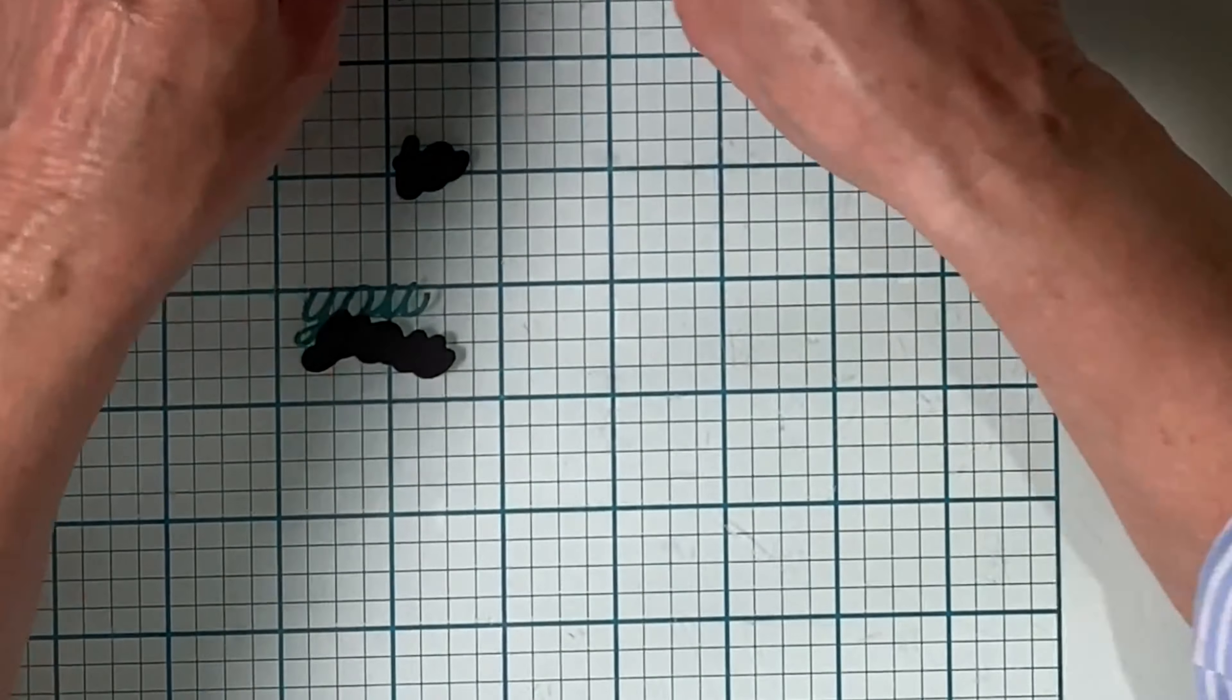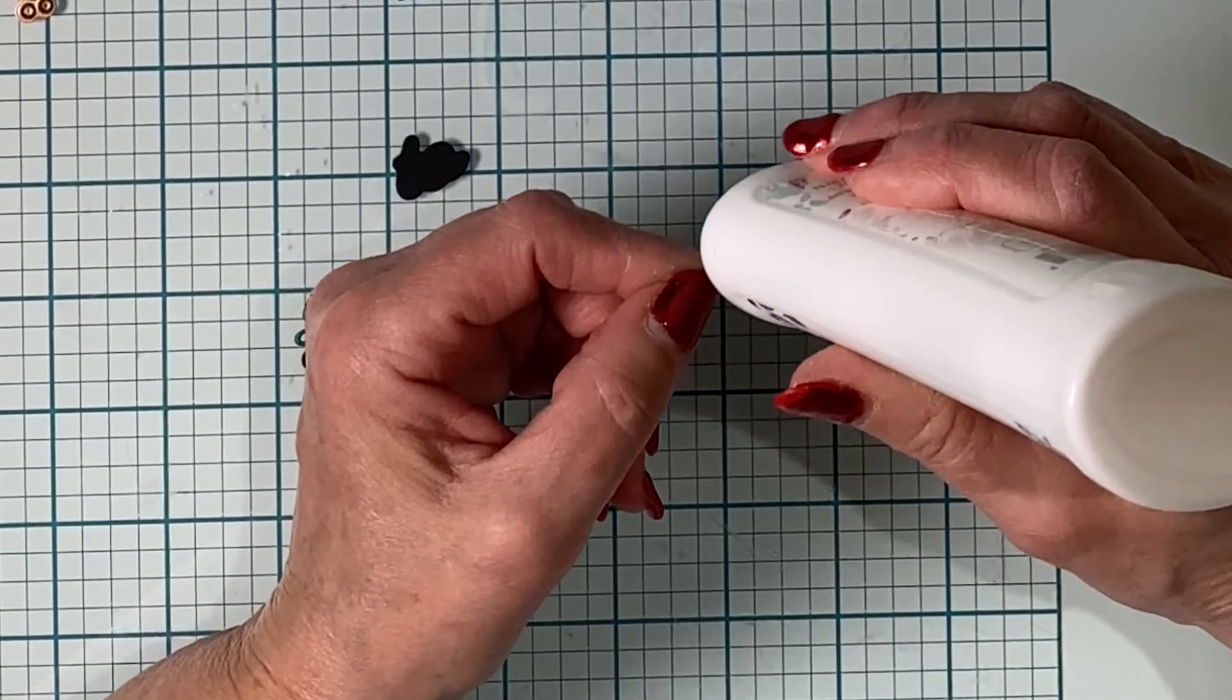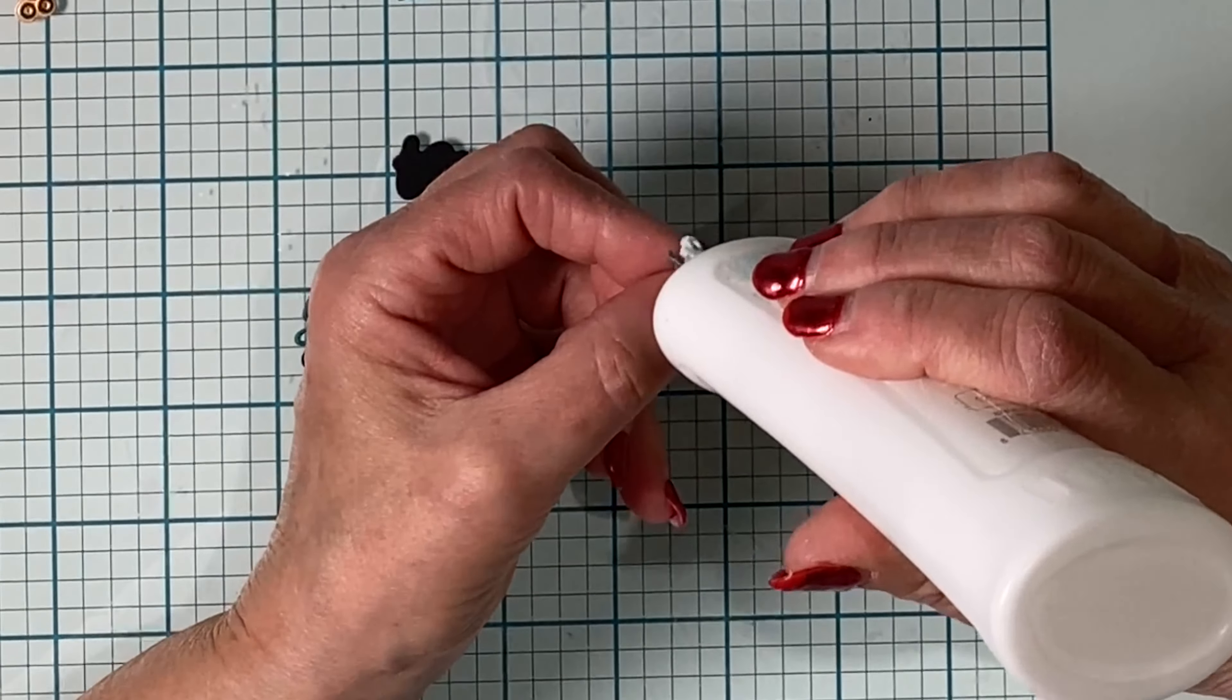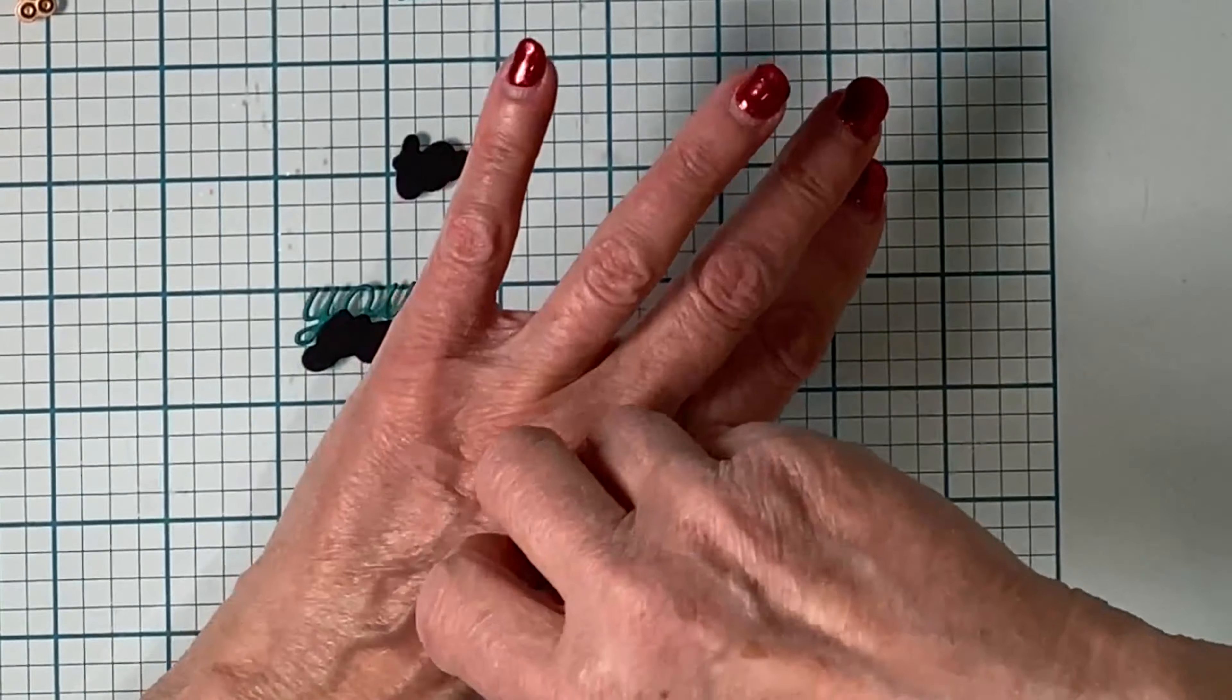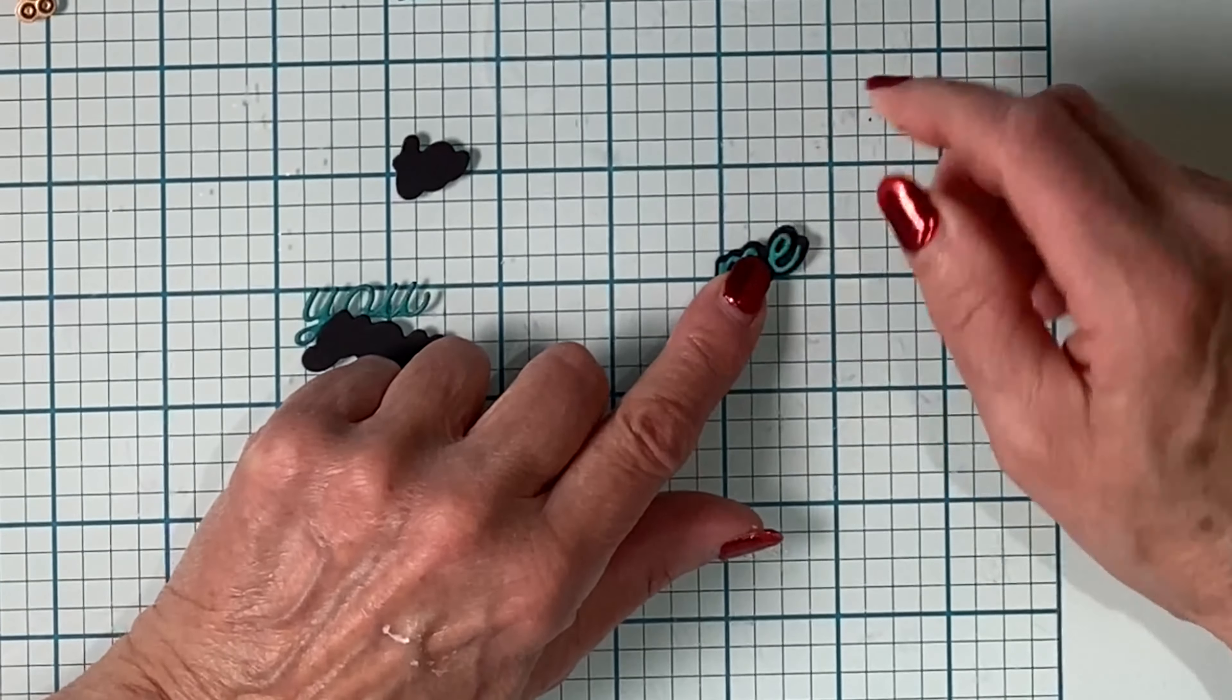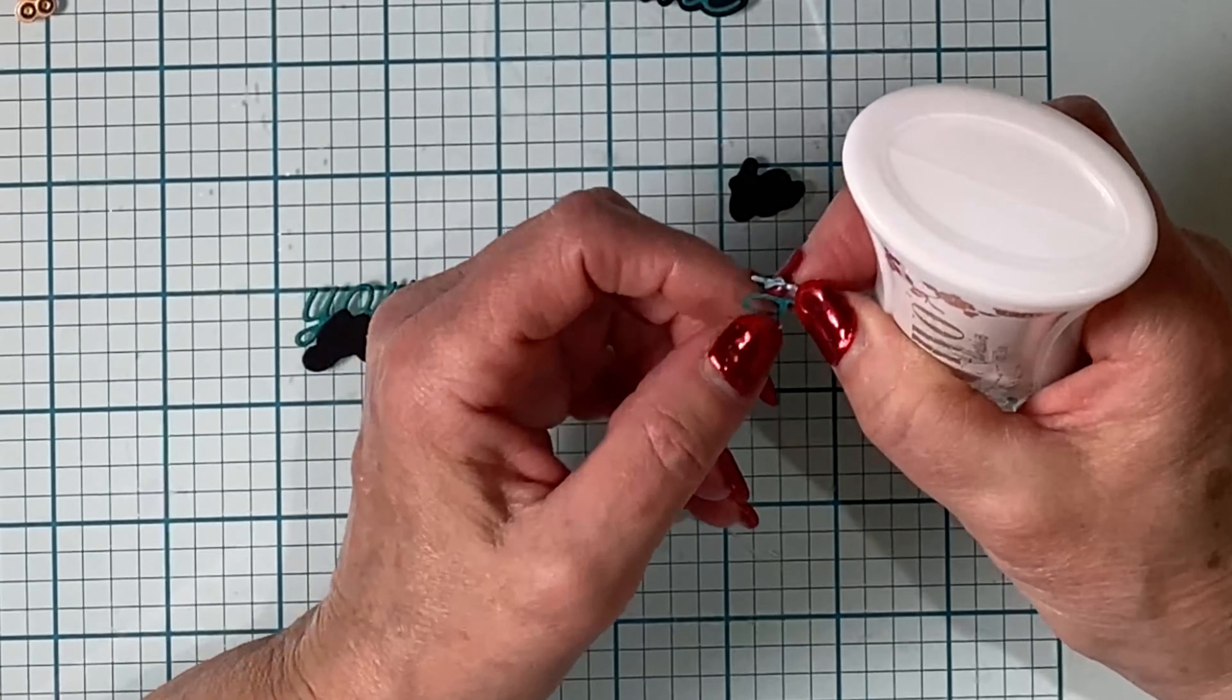The scripty dies were used to cut teal. As I apply the liquid adhesive to these fine die cuts, I will tap it off so that it won't ooze out when I pop it onto the shadow die cut. Yep, I tapped it off on the back of my hand. Whatever's handy I'm afraid.